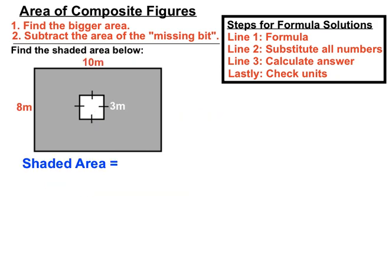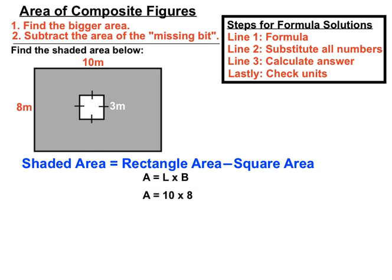Here's our numbers. We've got 10 across the top, 8 down the side, and our square has a side length of 3m. So our shaded area is going to be the rectangle area minus the square area. So different formulas for different things here. Not that much different, but still. Rectangle area: length times breadth. Our length is 10 and our breadth is 8. So our total area is 80m squared. Remember we're using square units for our area answers.